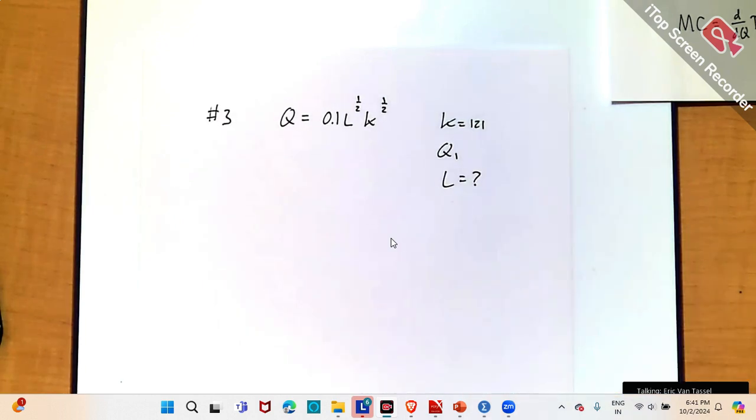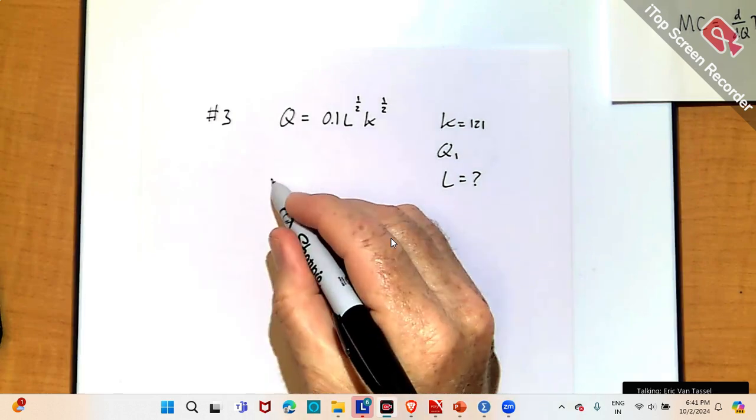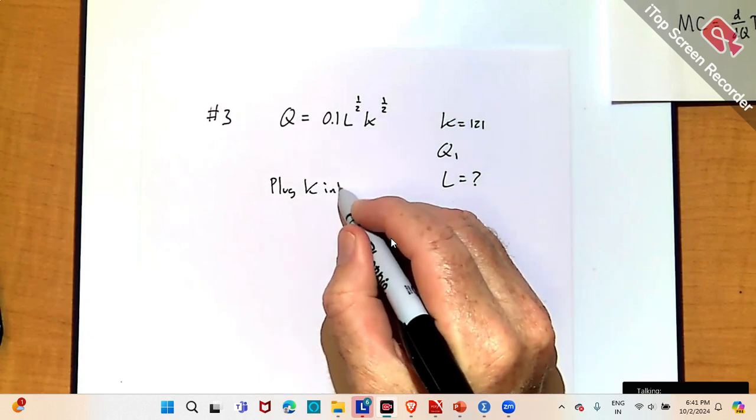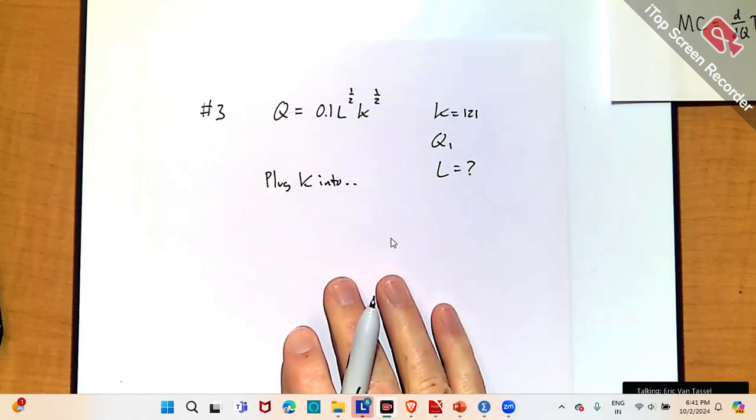Alright, so in this case I'm not looking at the cost, just trying to figure out how much labor should I purchase if I'm trying to produce some general target of Q1 units of output. So, what I can do first is plug K into the production function.